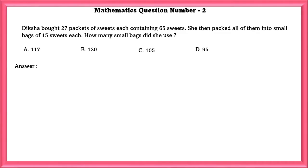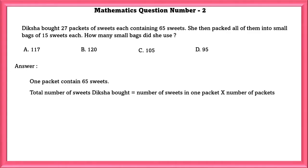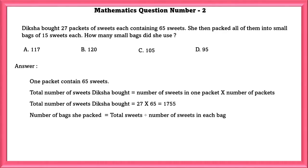Mathematics Question Number 2: Diksha bought 27 packets of sweets, each containing 65 sweets. She then packed all of them into small bags of 15 sweets each. How many small bags did she use? One packet contains 65 sweets. The number of sweets Diksha bought is equal to number of sweets in one packet times number of packets, which is equal to 1755. Then, number of packets she packed is equal to total sweets divided by number of sweets in each bag, which is equal to 117.